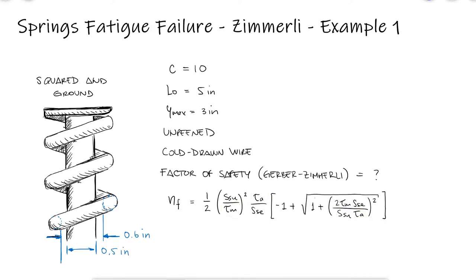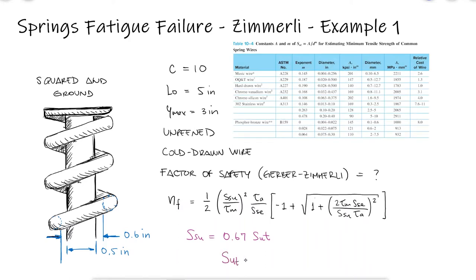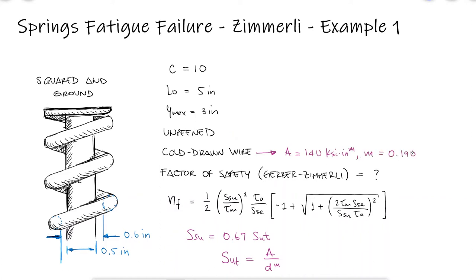From the main video, we know that a good estimate for the torsional modulus of rupture is 67% of the ultimate strength. To calculate the ultimate strength, we need to find the A coefficient and the M exponent for cold drawn wire. We also need the wire diameter.